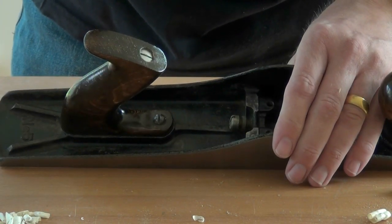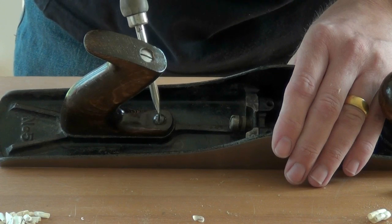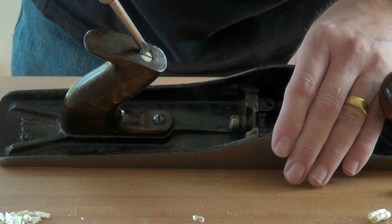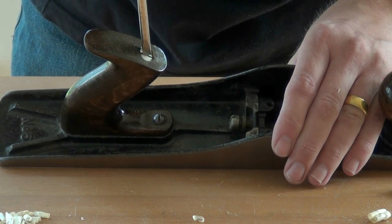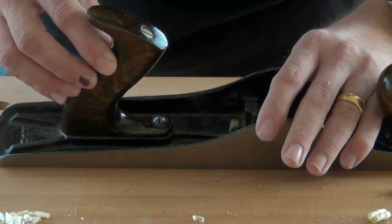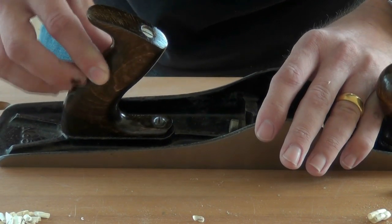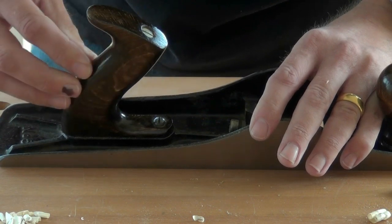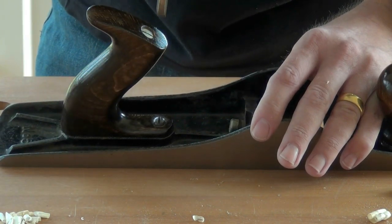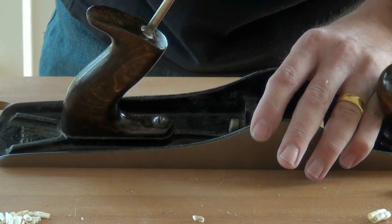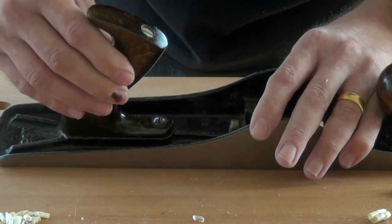The rear handle is attached by a screw at the base and a screw through the length of the handle. I often find the rear handles or totes to be loose on the body of the plane, and even tightening up these screws makes no difference.